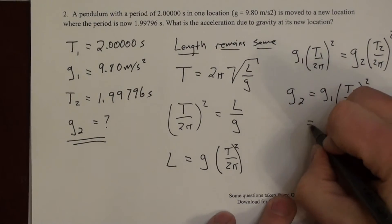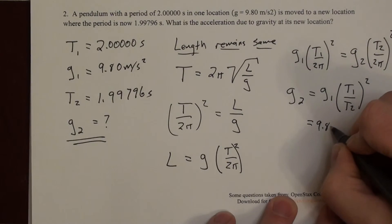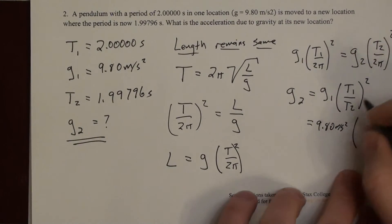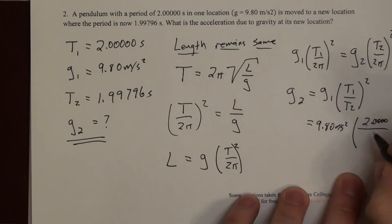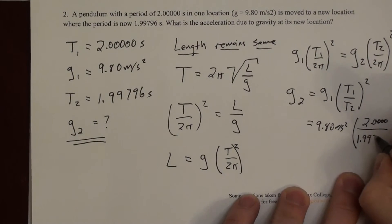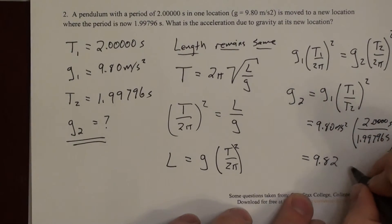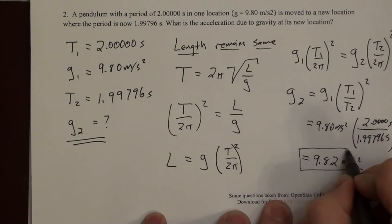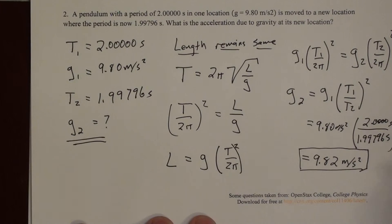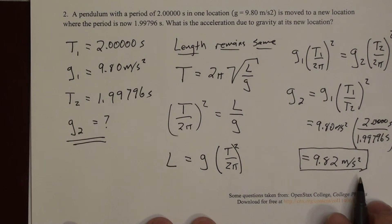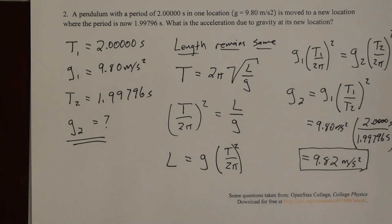Plugging in: g₁ = 9.80 m/s², t₁ = 2.00000 s, t₂ = 1.99796 s. Squaring the ratio and multiplying gives g₂ = 9.82 m/s². So at location 2, the acceleration due to gravity is slightly higher — maybe the elevation is lower, the composition of the earth differs, or the latitude and shape of the earth varies. It's not uncommon for g to vary from location to location.